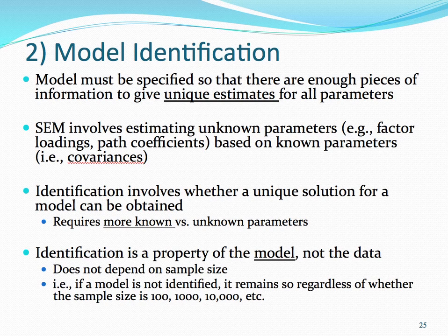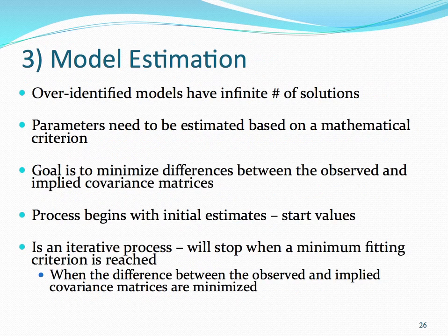Problems of evaluating our models often stem from model identification. A model is said to be identified if it is theoretically possible to derive unique estimates of each parameter. Therefore, identification is a property of the model, not the data. Once we have a model that is identified, we must then proceed to estimating the unknown parameters.